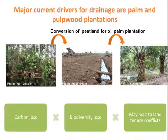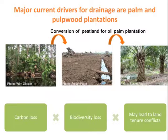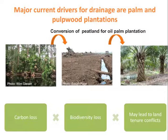The current major driver in tropical regions is palm and palm oil plantations. Here you can see an example where a very rich, biodiverse peatland is turned into palm oil plantations, leading not only to carbon loss, but also to biodiversity loss and potential land tenure conflicts.